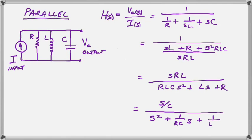So you write the equation and simplify it and once again we have the transfer function for the parallel case with the stated inputs and outputs.